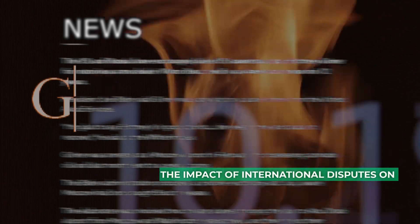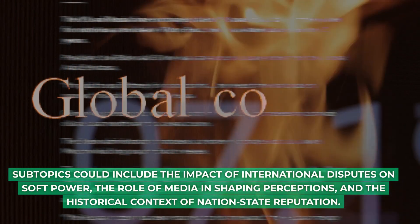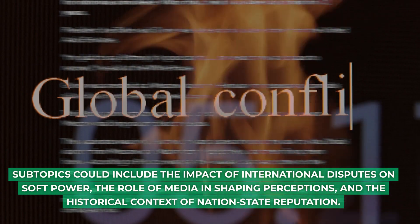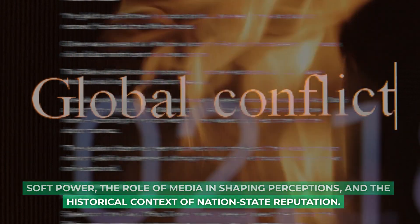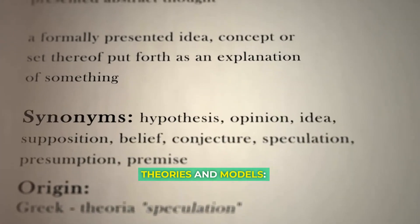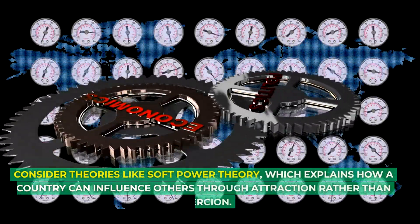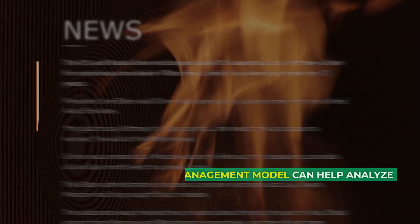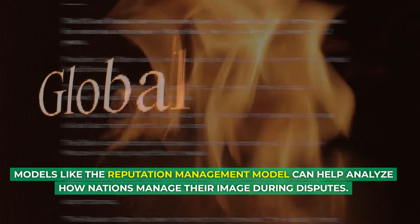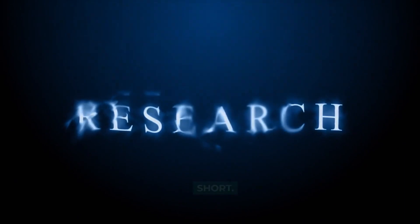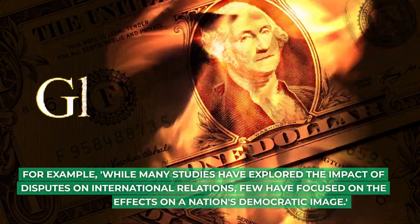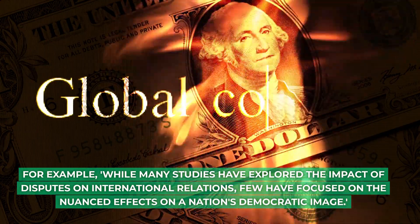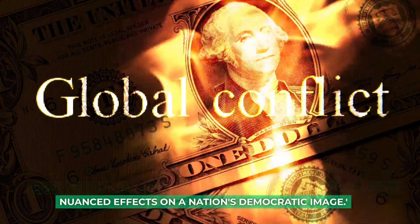Suitable subtopics could include the impact of international disputes on soft power, the role of media in shaping perceptions, and the historical context of nation-state reputation. Consider theories like soft power theory, which explains how a country can influence others through attraction rather than coercion. Models like the reputation management model can help analyze how nations manage their image during disputes. Identify a literature gap — for example, while many studies have explored the impact of disputes on international relations, few have focused on the nuanced effects on a nation's democratic image.